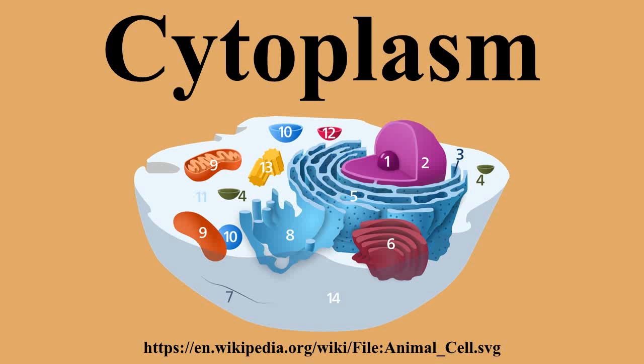Movement of calcium ions in and out of the cytoplasm is a signaling activity for metabolic processes. In plants, movement of the cytoplasm around vacuoles is known as cytoplasmic streaming.